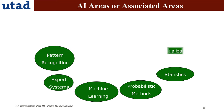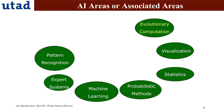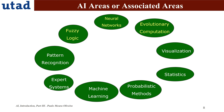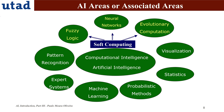Other associated areas include pattern recognition, visualization, evolutionary computation, neural networks, and fuzzy logic. These three — fuzzy logic, neural networks, and evolutionary computation — are grouped in an area called soft computing. All of these areas are connected to what is called computational intelligence or artificial intelligence.